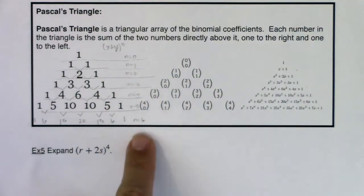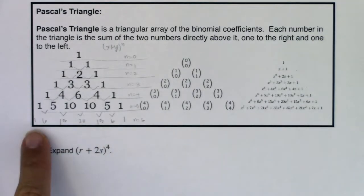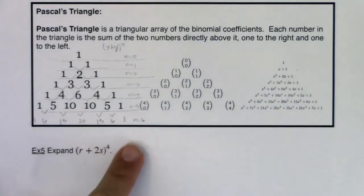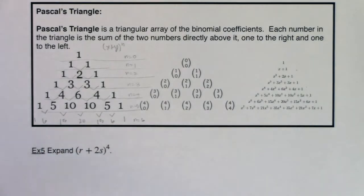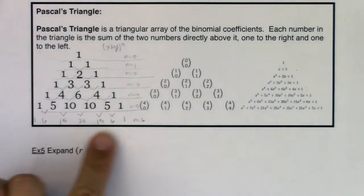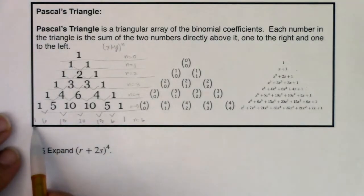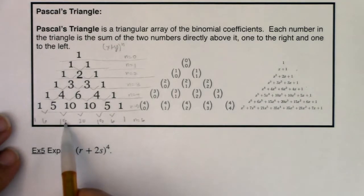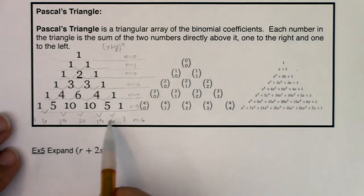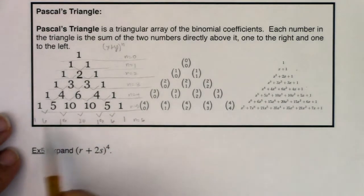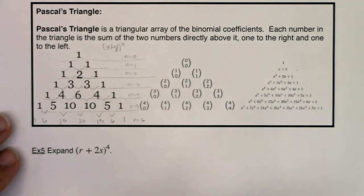Let me do the n equals six level so you can see me calculate it. Put ones on the outside: one plus five is six, five plus ten is fifteen, ten plus ten is twenty, then fifteen and six. So if I had a binomial raised to the sixth power, the coefficients are one, six, fifteen, twenty, fifteen, six, one. There's symmetry in that, and doing this is a lot faster than doing six choose zero, one, two, three, four, five, and six on a calculator.